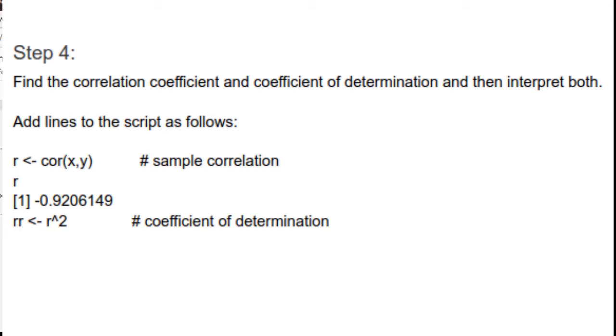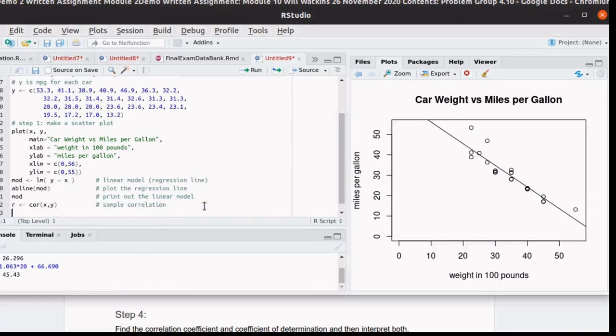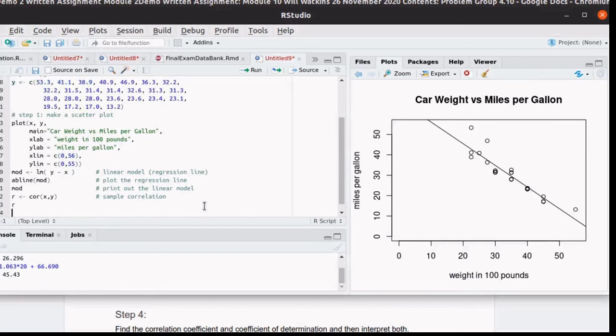So let's go to our script. We need to find R, which is just going to simply be the correlation between x and y. And this is the sample correlation. And of course, we'll want to shout that out so that we can use it. And then r squared, I'm going to call that rr, is going to be just r squared. That happens to be the coefficient of determination.